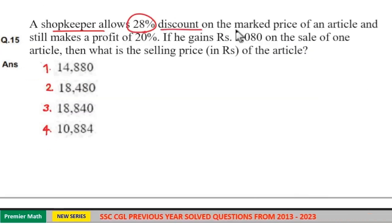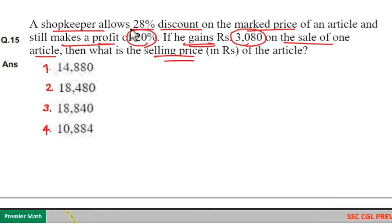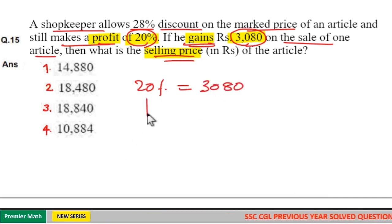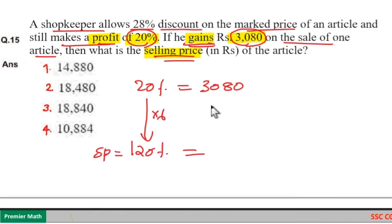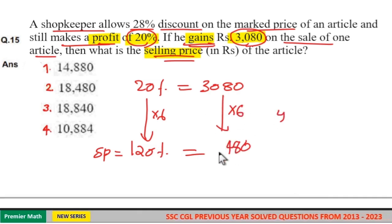A shopkeeper allows 28 percentage discount on marked price and still makes 20 percentage profit. If he gains rupees 3080 on sale of one article, what is the selling price? We don't need the 28 percentage discount here. Profit is 20 percentage and gain is 3080. If 20 percentage is profit, then 120 percentage is selling price. So selling price equals 3080 into 6 equals 18,480. Option 2 is your answer.